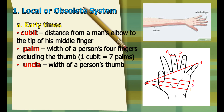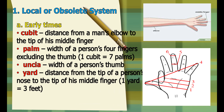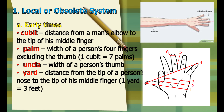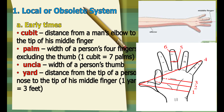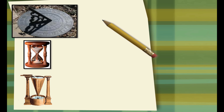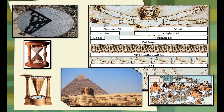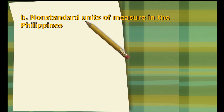Third is unsha, which is the width of a person's thumb. Next is the yard, which is the distance from the tip of a person's nose to the tip of his middle finger, and one yard is equivalent to three feet. Aside from body parts, ancient people also used instruments like sundials in measuring time. In different parts of the world, they had different systems of measurement during early times, and even in our country there are non-standard units of measurement.